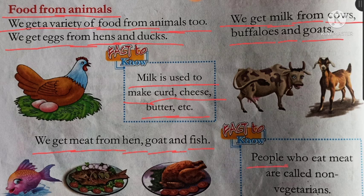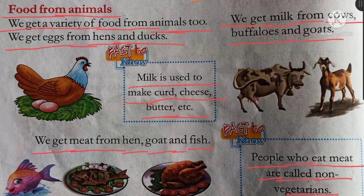People who eat meat are called non-vegetarian. People means log. Non-vegetarian means maansahari. Jo log meat khaate hain, wo non-vegetarian kehlaate hain.